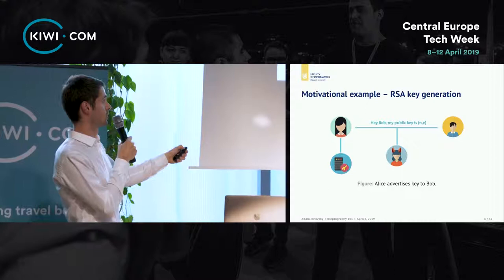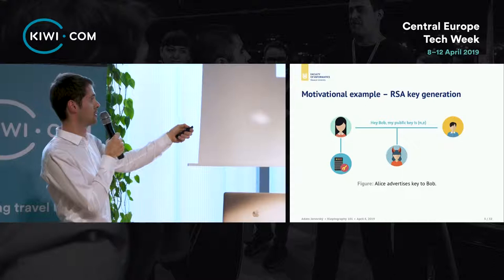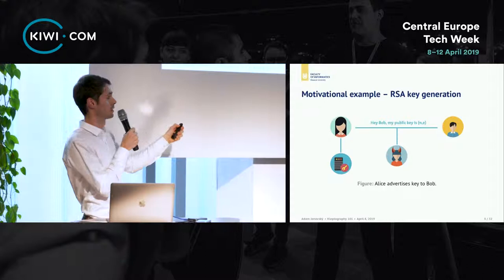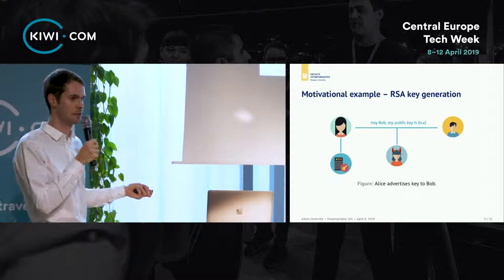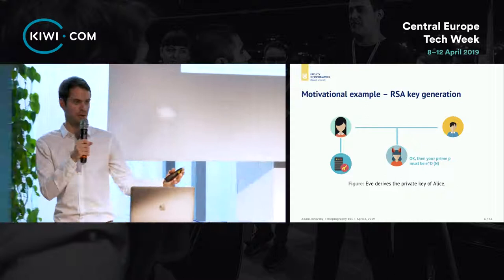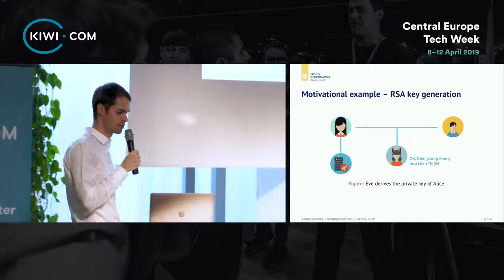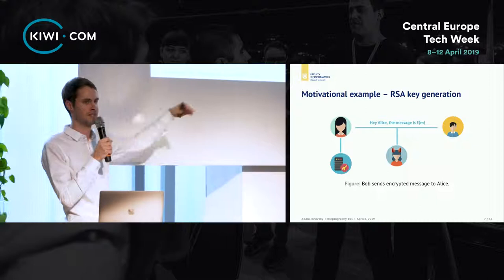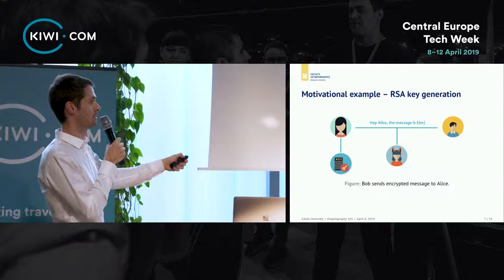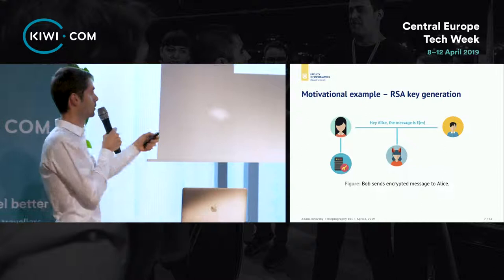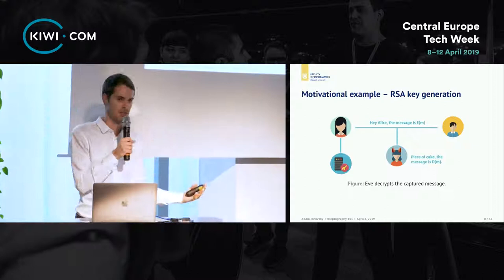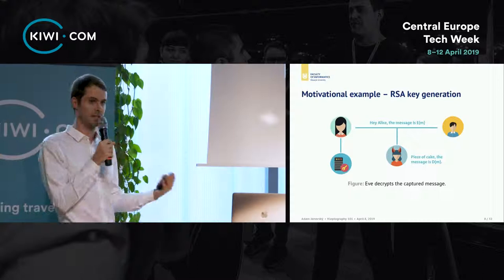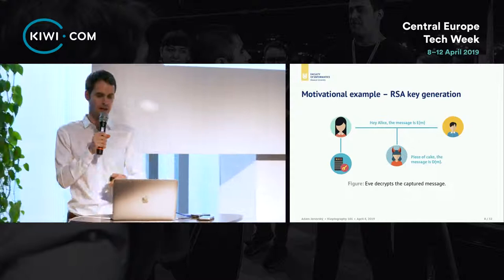Alice generates her private key on the device and advertises the public key to Bob. Evil Eve is eavesdropping on the insecure channel and catches the public key. Since she has access to the backdoor version, she can derive the private key. When Bob sends an encrypted message to Alice using her public key, Eve can decrypt the message because she obtained the private key. This is a nice application of kleptography and practically constitutes a kleptographic backdoor.